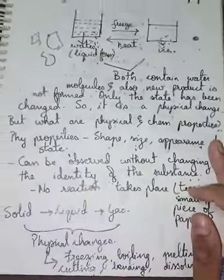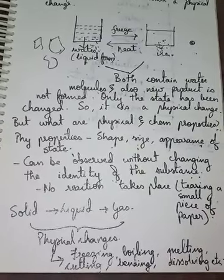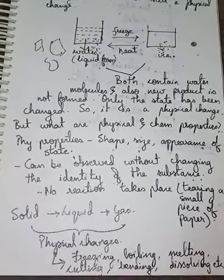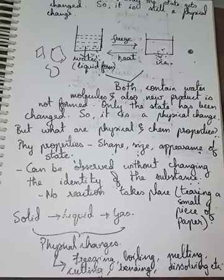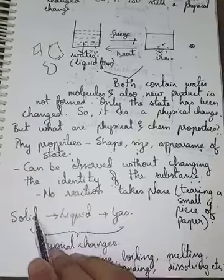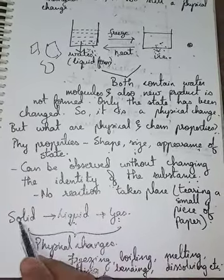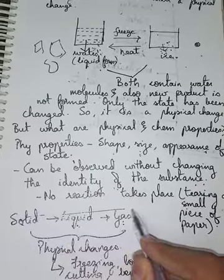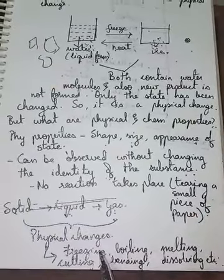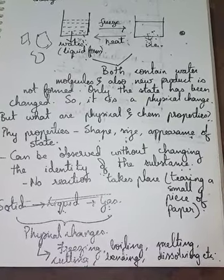Chemical properties are not visible to your eye because they involve chemical reactions. You can only determine chemical properties when substances undergo chemical reactions. Also, state changes like solid to liquid, liquid to gas, gas to liquid, or liquid to solid are all physical changes. Processes like freezing, boiling, melting, cutting, bending, and dissolving are all physical changes.